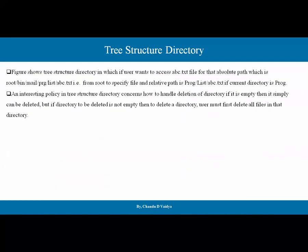An interesting policy in the tree-level directory structure concerns how to handle the deletion of directories. If the directory is empty, then it can simply be deleted — meaning if there are no files in the directory, it can be directly deleted. But if the directory to be deleted is not empty, then the user must first delete all files in that directory before the directory itself can be deleted.